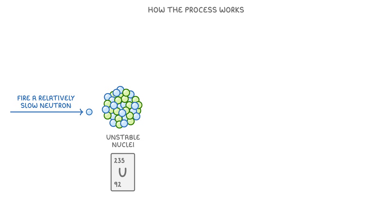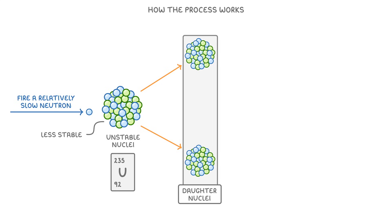To understand how the process works, let's go through the steps. As we said, we start off with a large unstable nucleus, like uranium-235, and we fire a relatively slow-moving neutron at it. This addition of a neutron makes it even less stable and causes it to split apart into two smaller nuclei, called daughter nuclei.